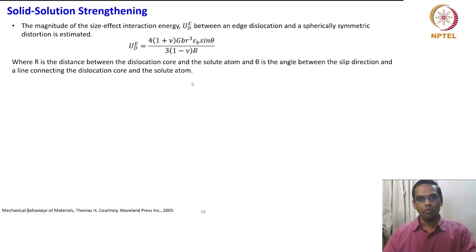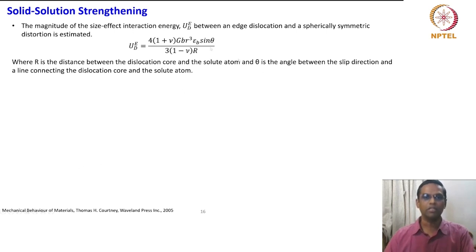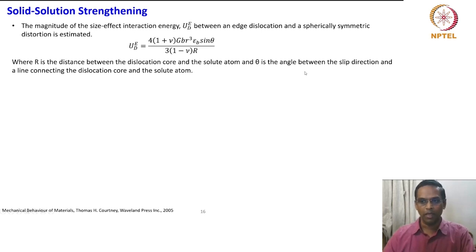We are now looking at the semi-quantitative expression for the size effect. We were talking about distortion and dilation. Whether it is interstitial or substitutional solid solution, the size effect is given by this kind of expression which is directly related to parameters like R — the distance between the dislocation core and the solute atom — and theta, the orientation with respect to the slip direction and the line connecting the dislocation core and solute atom.